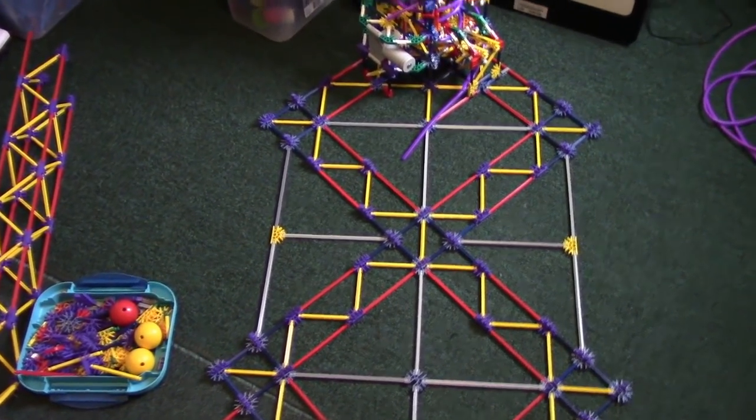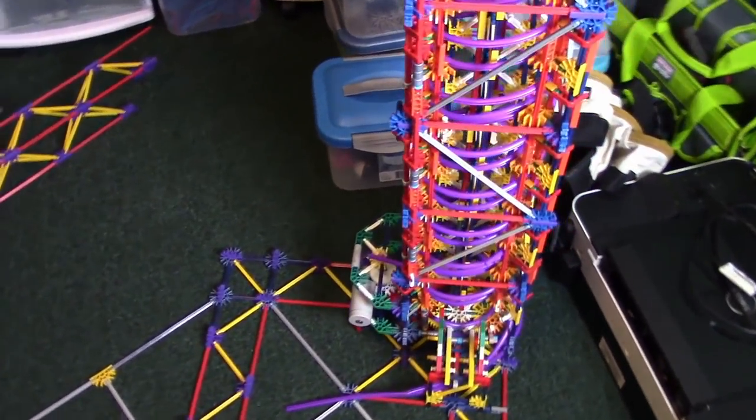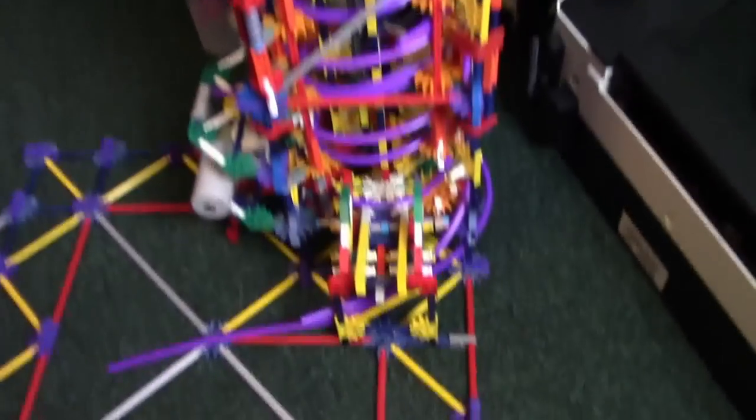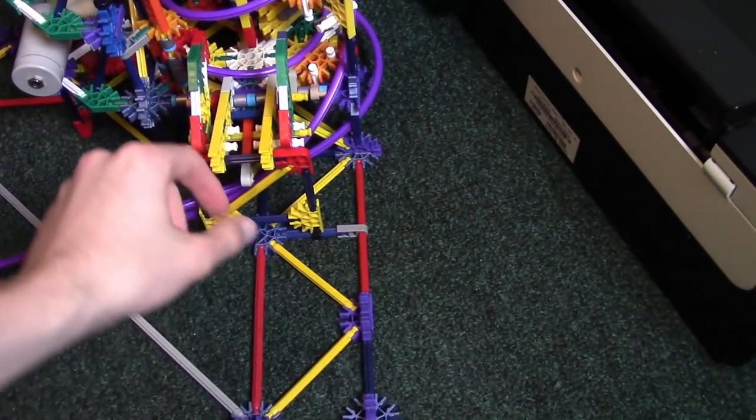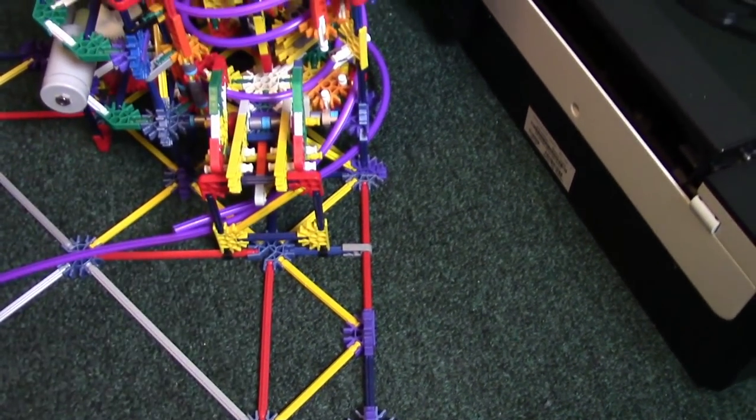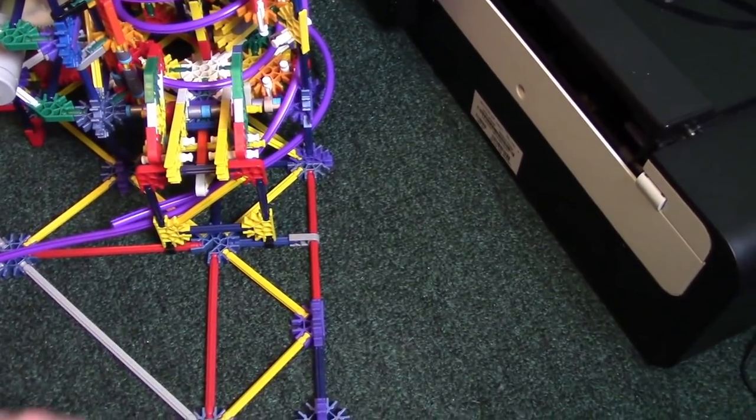And so what I'll have to do is the loading track is going to make a 90 right here, so it's going to come out that way. And there's going to be a wheel right here to help with ball distribution, and I'll explain that later.